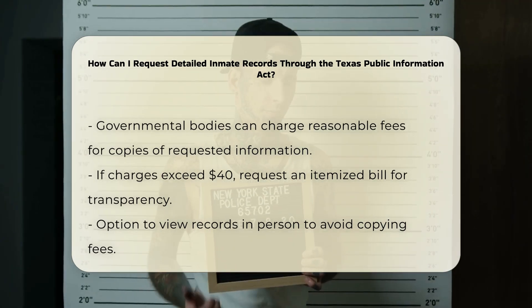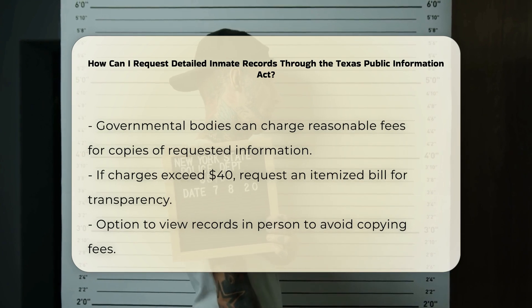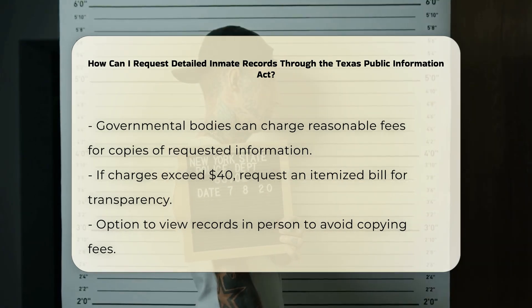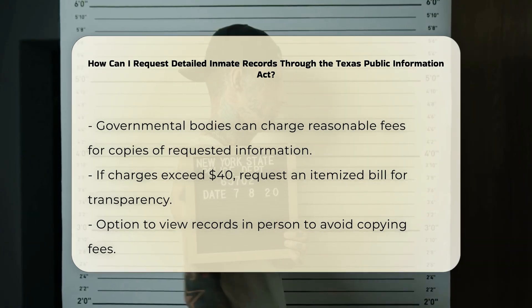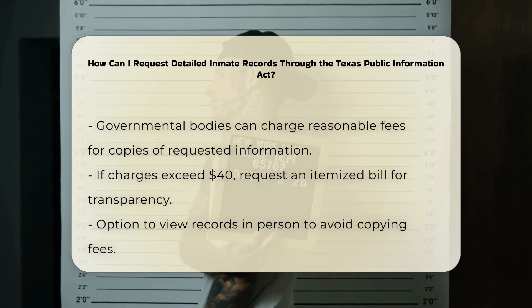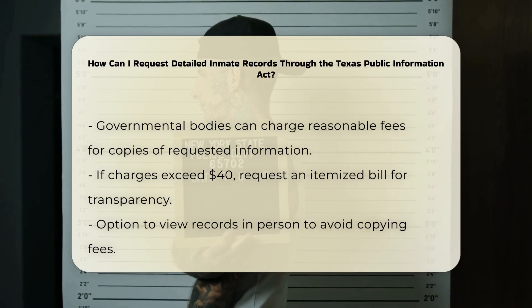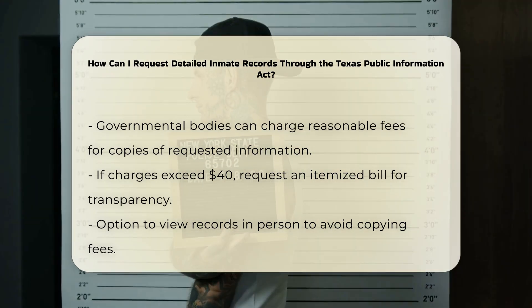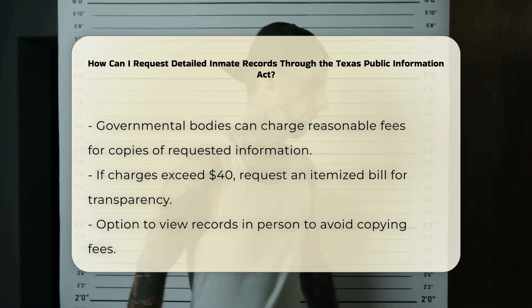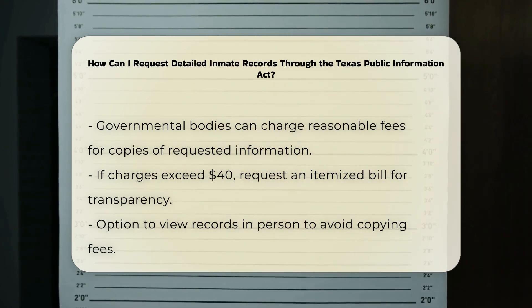Charges and fees: The governmental body can charge for copies of the requested information, but the fee must be reasonable and cannot be used to discourage the request. If the charge exceeds $40, you are entitled to an itemized bill. You can also ask to view the records in person to avoid copying charges.